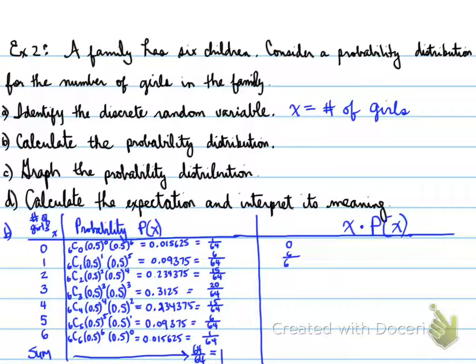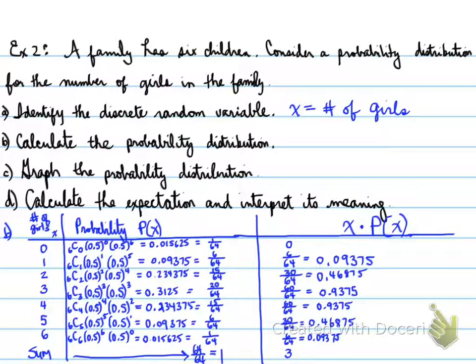For x times P(x), I really would like you to reduce the fractions for me, please, or give me the decimal value. Reduce the fractions or give me the decimal value.